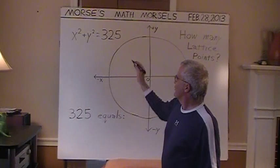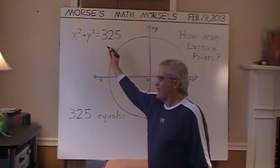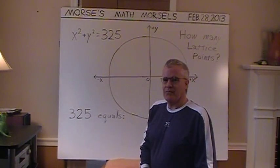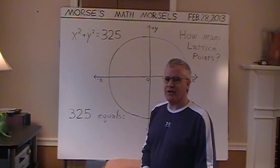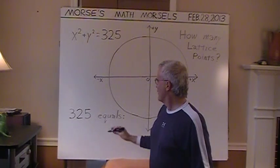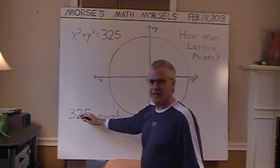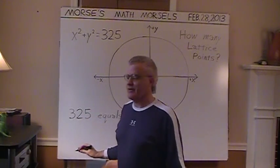And a lot of this comes down to finding two integers, positive or negative, such that the sum of the squares equals 325. And I chose this number strategically, 325.